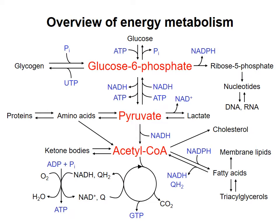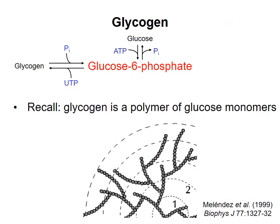But sometimes, instead of using G6P to make ATP, cells will store it away as glycogen. Remember that glycogen is just a large polymer composed of a great many glucose monomers joined together in a specific way. Each circle on this diagram represents one glucose monomer. Glycogen is a form of energy storage found mainly in two types of tissue in your body: in the liver and in muscles.